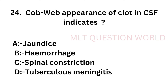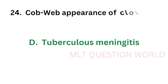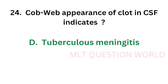Question number 23: Cobweb appearance of clot in CSF indicates — option A: Jaundice, option B: Hemorrhage, option C: Spinal constriction, option D: Tuberculous meningitis. The correct answer is option D, tuberculous meningitis. Cobweb appearance of clot in CSF indicates tuberculous meningitis.